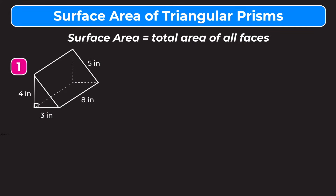In this video we're learning how to find the surface area of triangular prisms. The surface area is equal to the total area of all faces, and that's true for any three-dimensional figure. For this triangular prism, we just want to find the area of each of the five faces and add those together.